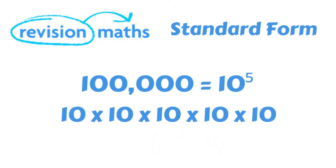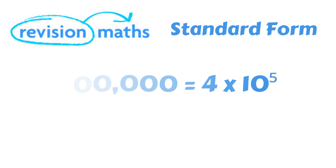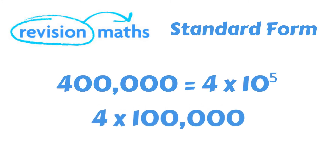If we take the example of 400,000, this can be expressed in standard form as 4 times 10 to the power of 5, because 400,000 is 4 times 100,000.